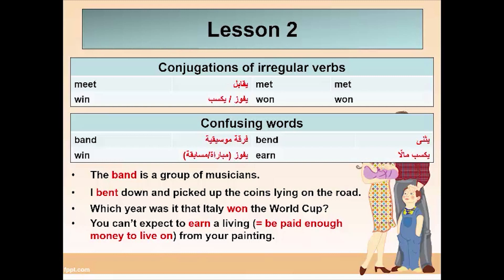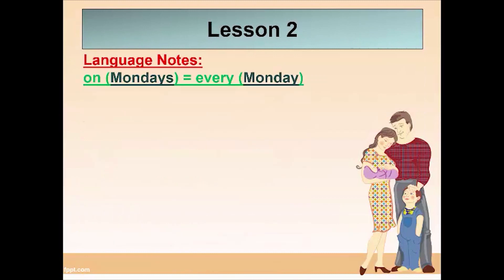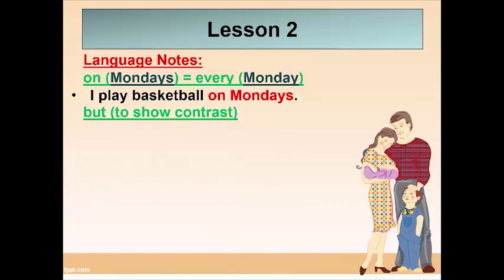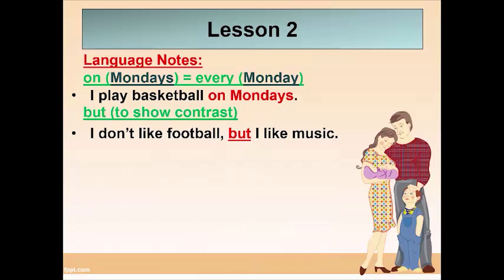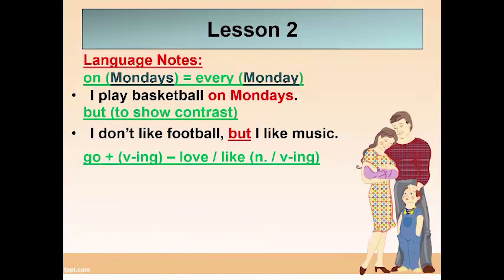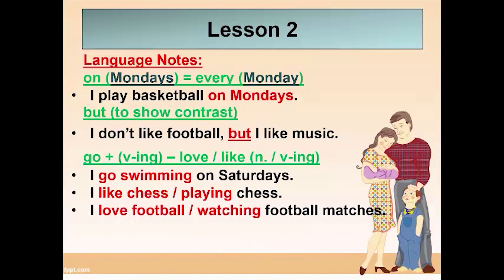We have some language notes. The preposition 'on' with days of the week — for example, 'on Mondays' means every Monday: 'I play basketball on Mondays' means I play basketball every Monday. 'But' is a conjunction used to show contrast: 'I don't like football, but I like music.' Go plus gerund, and love/like plus gerund or a noun: 'I go swimming on Saturdays.' 'I like chess' or 'I like playing chess.' 'I love football' or 'I love watching football matches.'